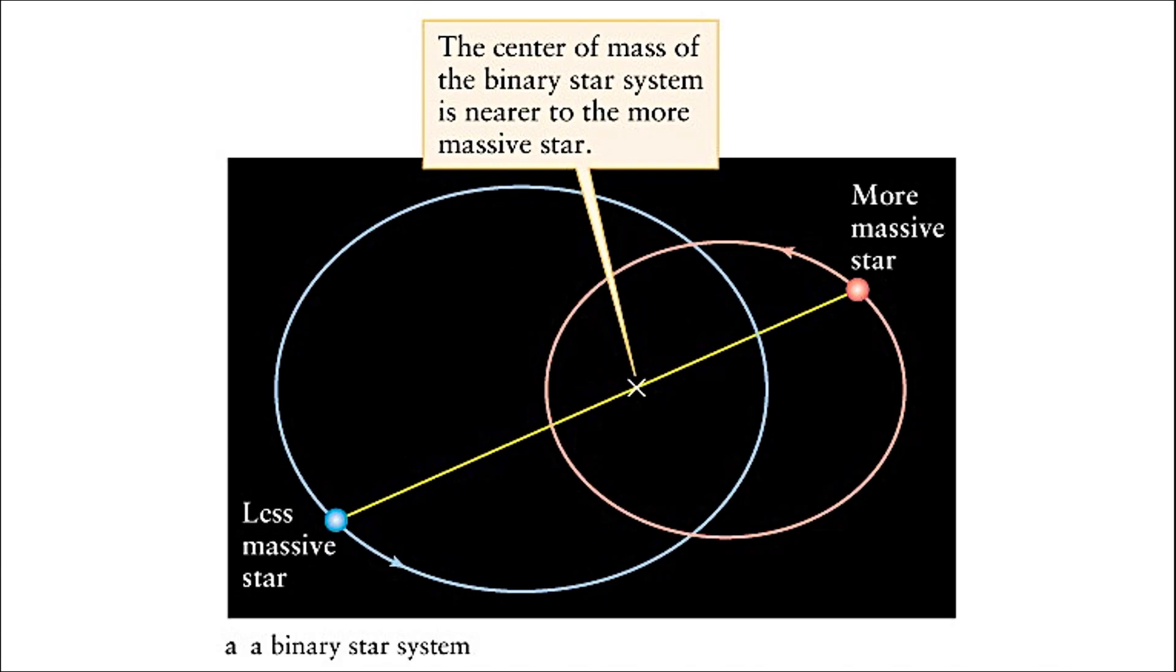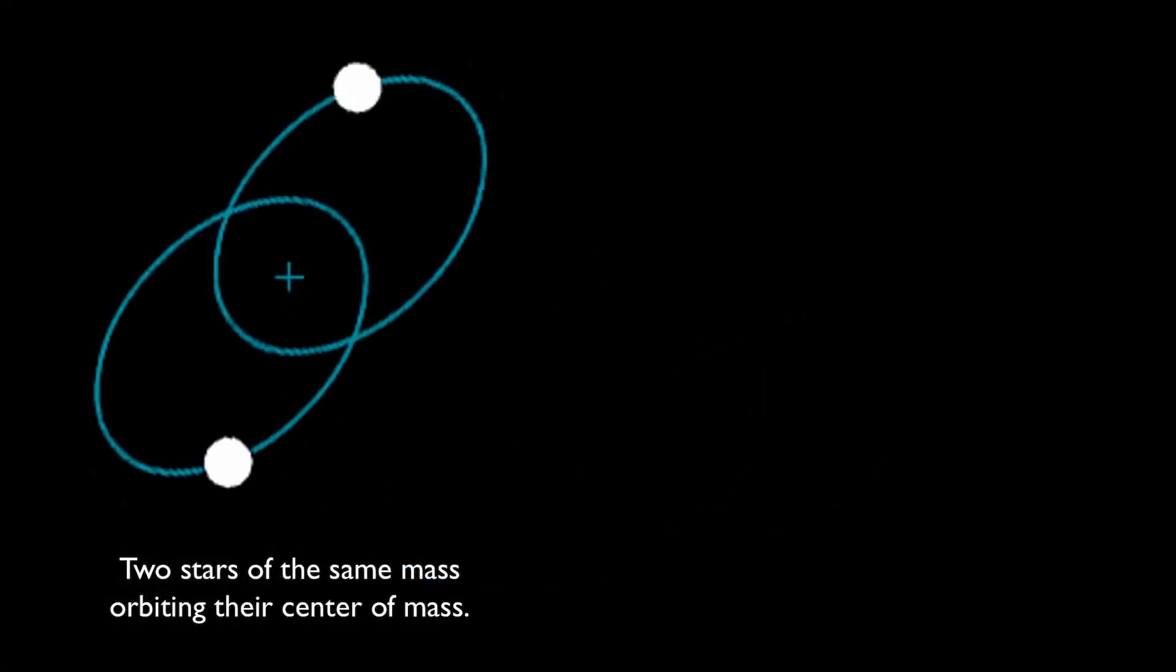This center of mass is always going to be located closer to the more massive object. So when two stars orbit each other, we can determine their masses by observing the location of the center of mass of the system.